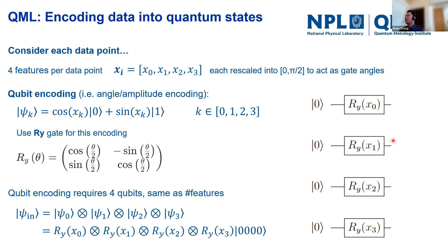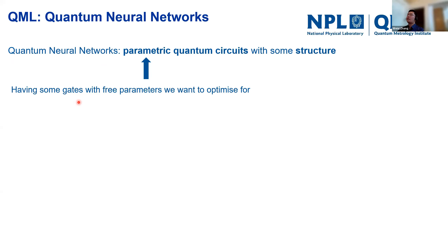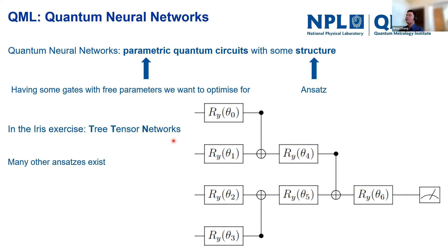After encoding, we classify the data points using quantum neural networks. A QNN is simply a parametric quantum circuit with some structure — the circuit has gates with free parameters to optimize. We call this structure an ansatz. In this tutorial we use the tree tensor network ansatz, which looks like a binary tree. It ports the classical tree tensor network into a quantum version. Many other ansätze exist, but here we focus on implementing this one.